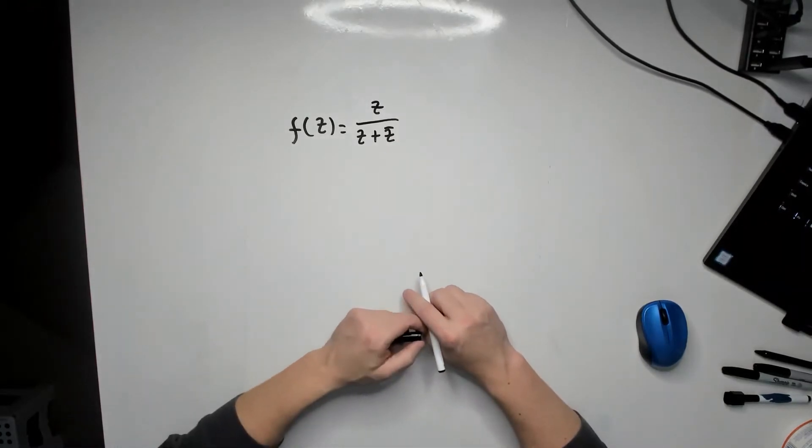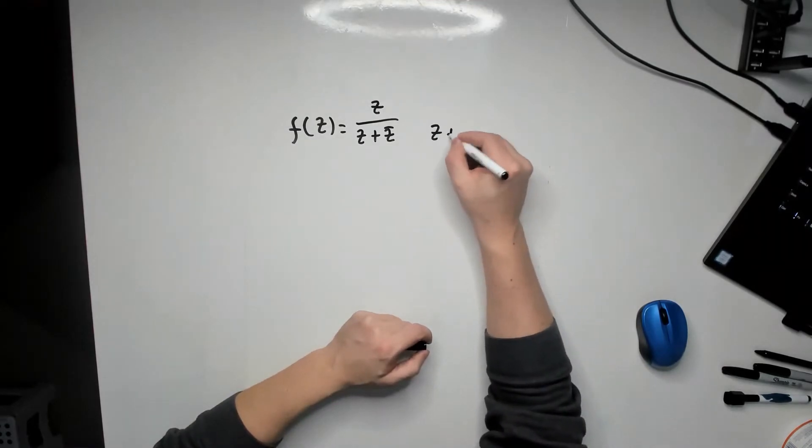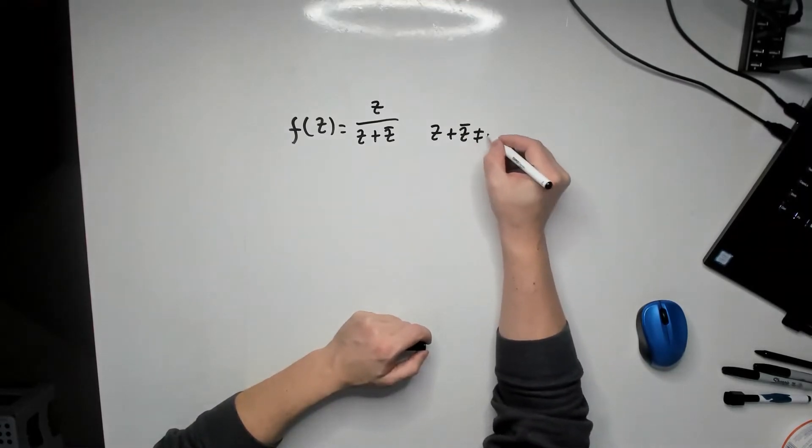So what I have to have is the following: that the quantity on the bottom, z plus z bar, does not equal to 0.